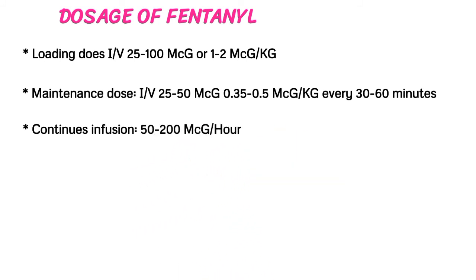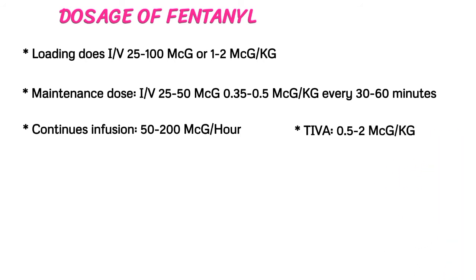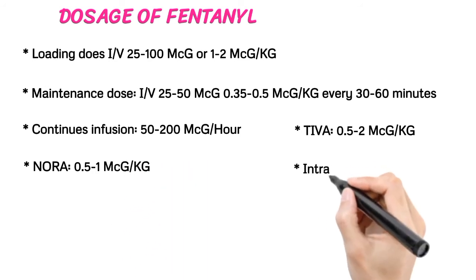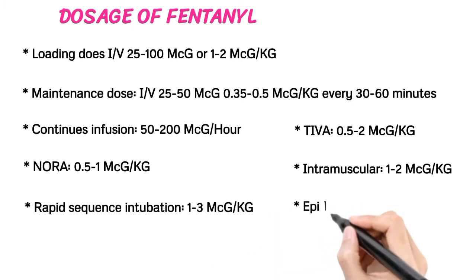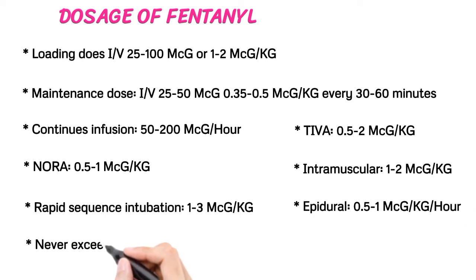Continuous infusion: 50 to 200 micrograms per hour or 0.5 to 2 micrograms per kg. NORA: 0.5 to 1 micrograms per kg. IM: 1 to 2 micrograms per kg. Rapid sequence intubation: 1 to 3 micrograms per kg. Epidural: 0.5 to 1 micrograms per hour. Never exceed single doses of 3 micrograms per kg.